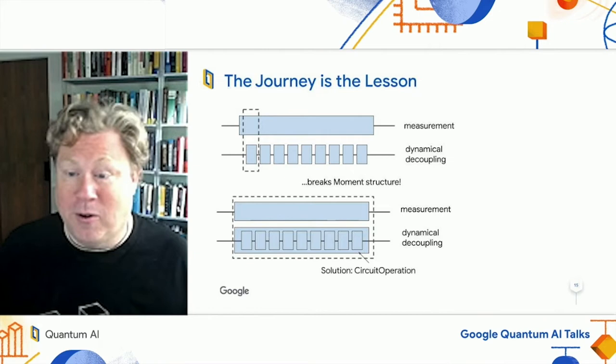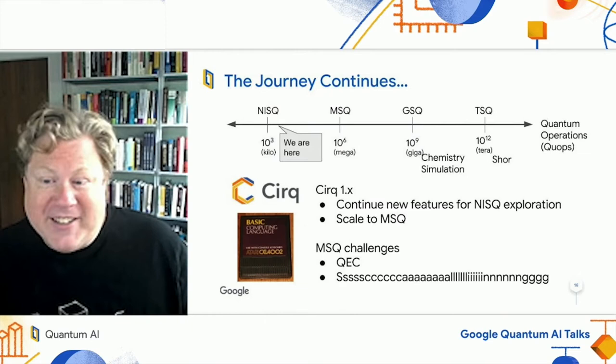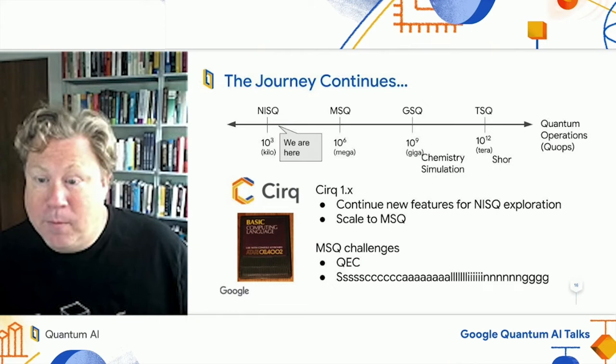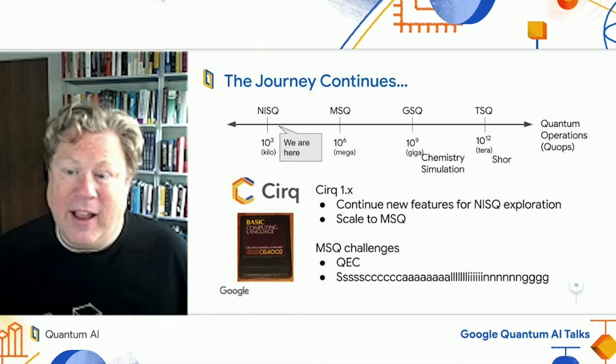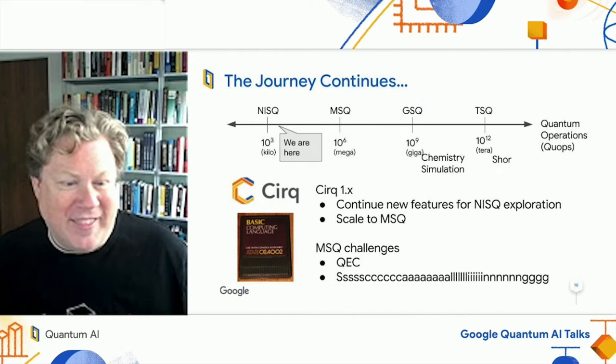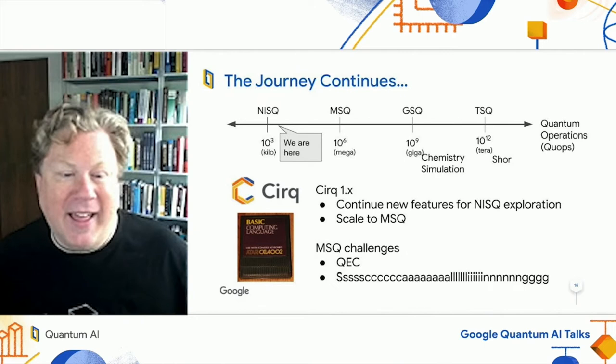The journey continues. Cirq 1.0 is not done — there are lots of features and new things that we'll be adding. Mostly it's about stability and that we've gotten to a point where we really believe we have a complete set of base features. We need to scale from this NISQ era into what I call the MISC era. I propose labeling the new eras by the number of quantum operations they can perform: after NISQ would be MISC (mega), then GISC (giga), and then TISC (tera) — as we start to add error correction.